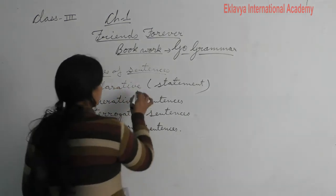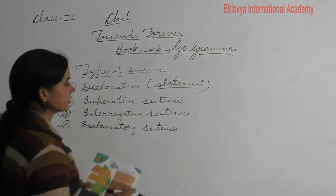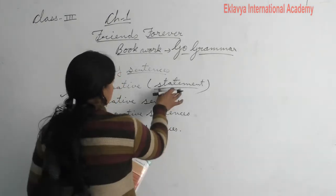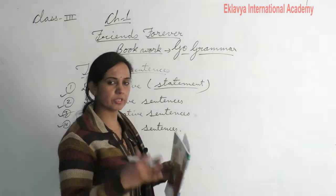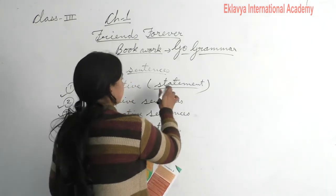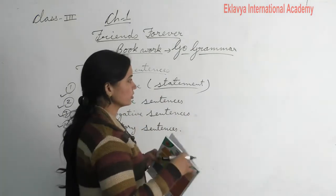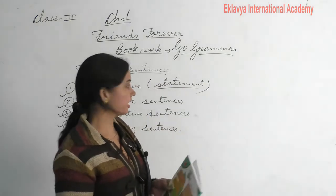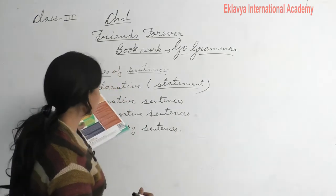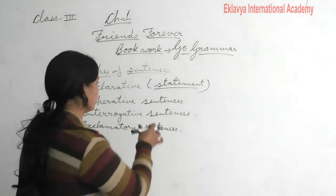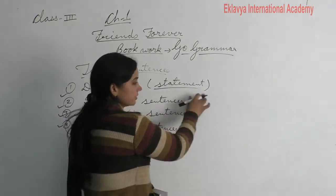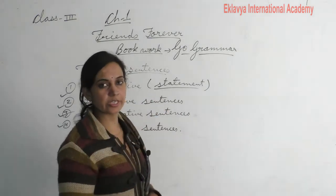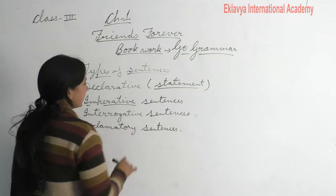So students, first let's see what declarative sentences are. A declarative sentence means a statement — it tells about a fact and affirmation of the sentence. It is also called affirmative sentences. In declarative sentences, the sentence can be positive or negative.